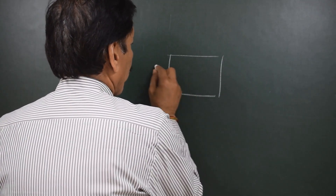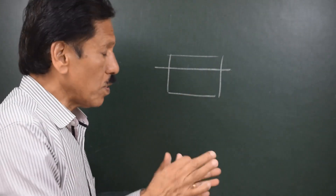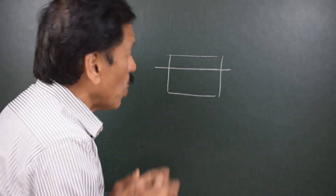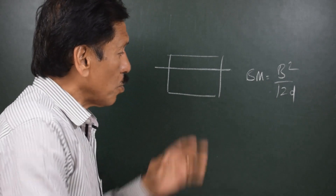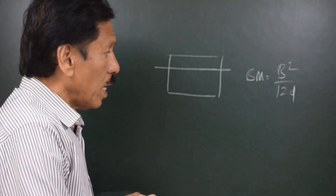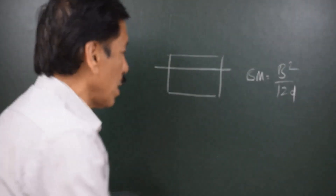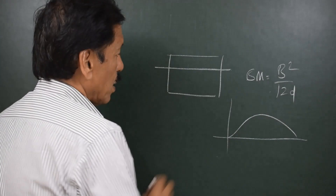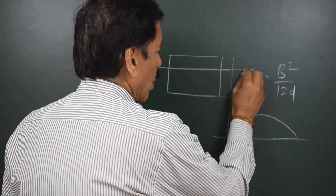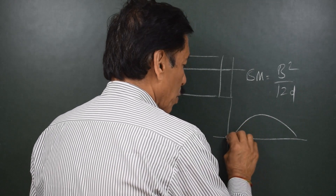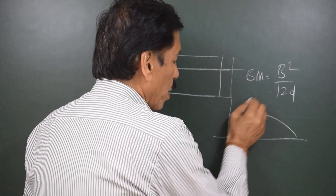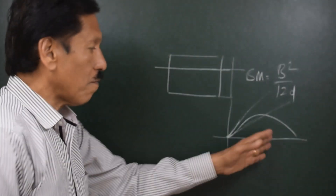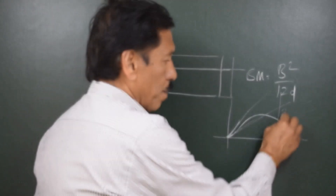Suppose we conduct an experiment on a box-shaped vessel and see what happens if we change the beam. We don't change the draft, we don't change anything — just the beam is increased. Because the beam is increased, what will happen is the BM, that is the distance between center of buoyancy and metacenter, will increase. And if the BM increases, the GM increases. And if the GM increases, what happens to the GZ curve? Suppose this was the original GZ curve. After increase of beam, what will happen is the curve would, instead of initially going in this direction, go in a direction higher than the original curve. This is because the slope at the initial part indicates the GM at 57.3 degrees.